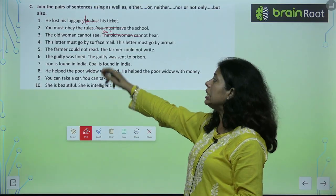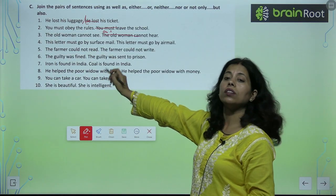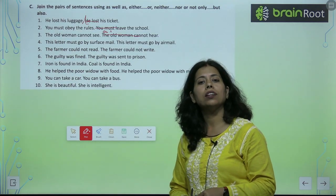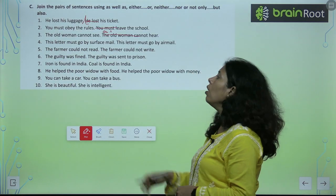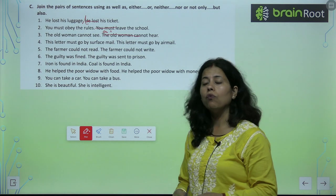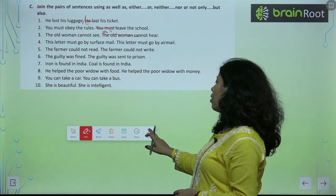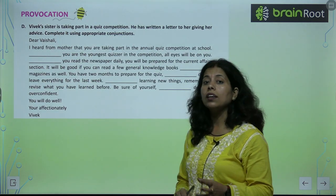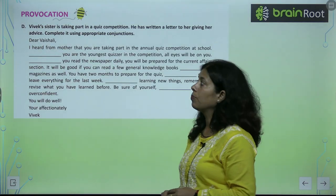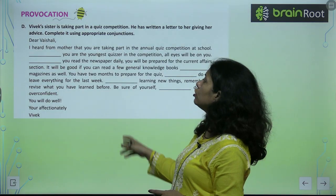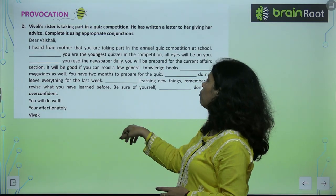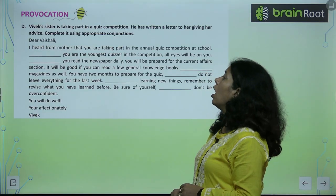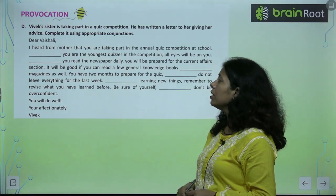So these remaining sentences I will leave for you. You have to do this in your notebook as homework. I hope aapko samaj aaya hoga ki conjunction kya hoti hai. This exercise you will do as homework. I will solve one more for you — this is a letter, I think.